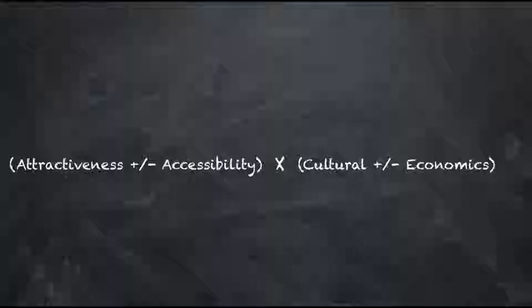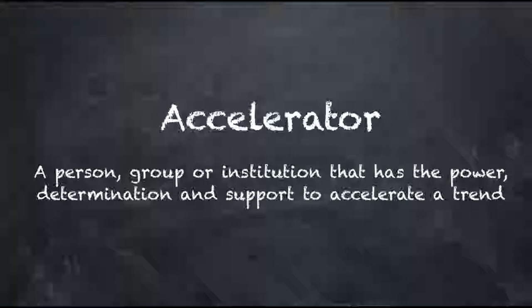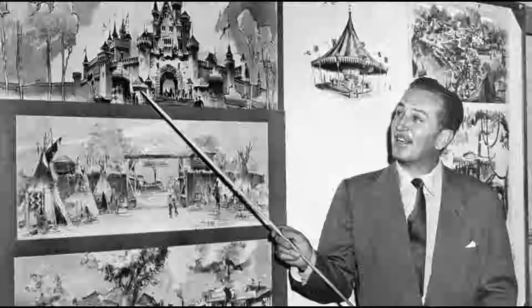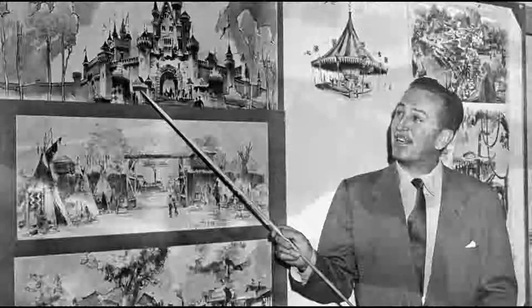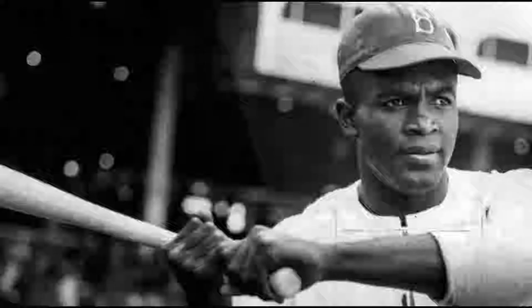There's one more factor that can be added to our equation, which takes the value of all these variables and amplifies them — what we call an accelerator, which can be described as a person, group, or institution that has the power, determination, and support to accelerate a trend. Walt Disney brought us the modern theme park through imagination and creativity. Jackie Robinson broke the color barrier with dignity and grace. Steve Jobs changed the way we use technology through design and innovation. And Malala Yousafzai brought upon education reform through courage and conviction. These accelerators turn trends into long-lasting movements through their vision, hard work, and determination.